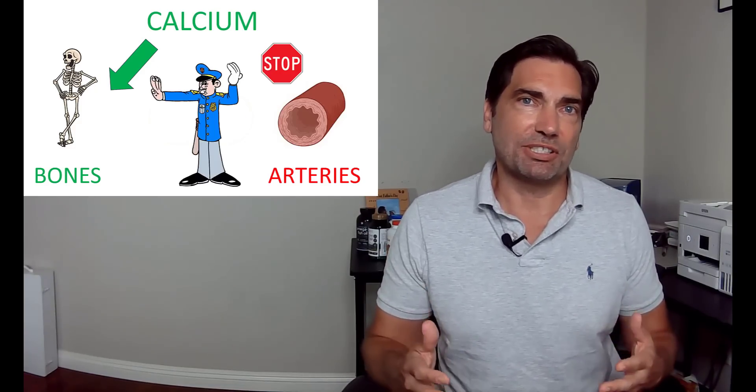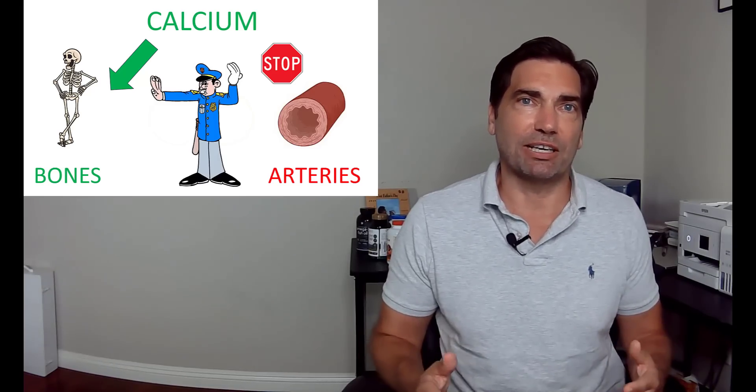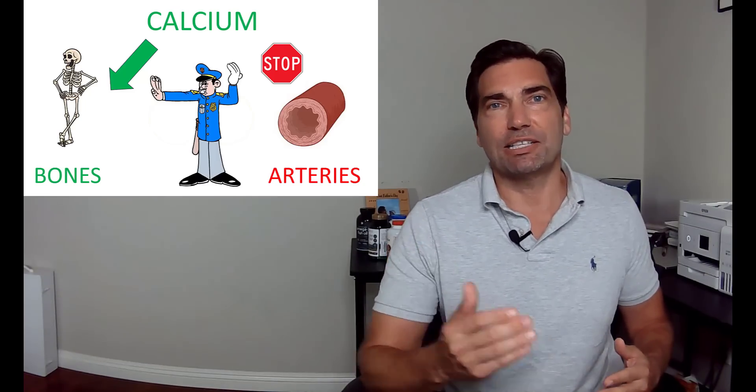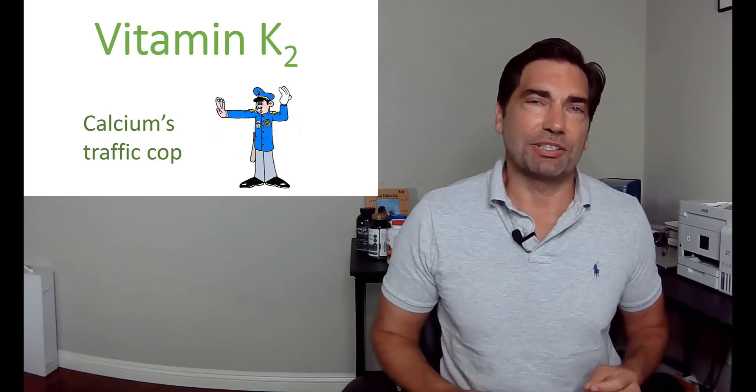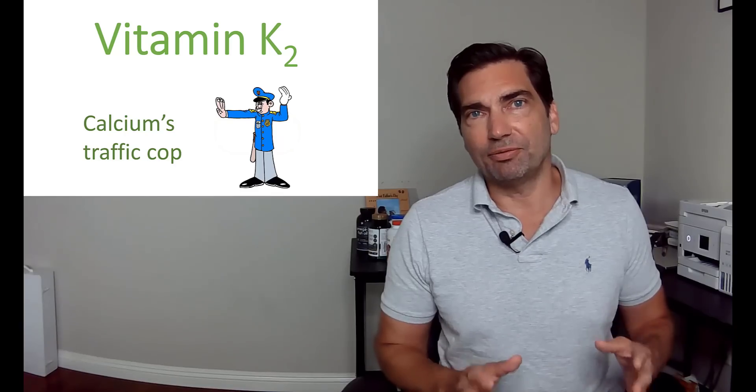What we're looking for is a chemical signal to tell our body where to put the calcium. We need a traffic cop to say stop, don't put the calcium in the arteries, let's put it in the bones where we want it. That traffic cop for calcium is called vitamin K2, and this is the most important vitamin that you're probably deficient in.